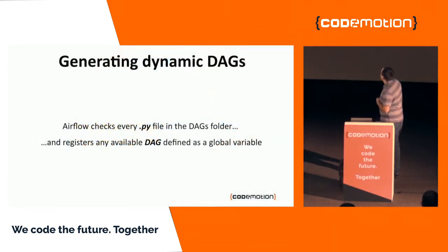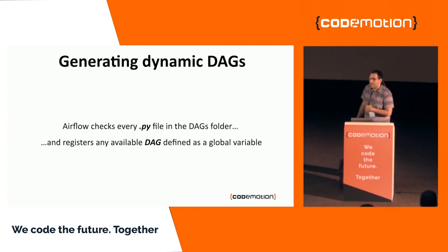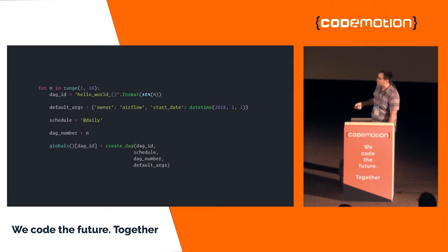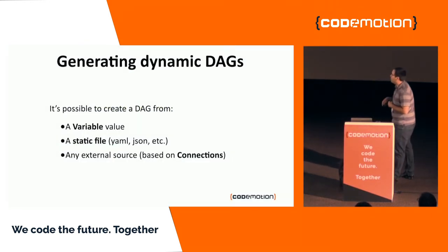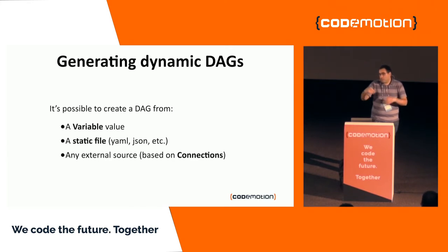As a recipe, you can generate dynamic DAGs. DAGs are written in Python and Airflow checks every Python file in the DAG folder, registering any DAG variable defined in the global space. So you can create 10 DAGs on the fly. At Idealista, we use YAML files to create DAGs: we define all the necessary metadata in YAML files and DAGs are created dynamically from them.